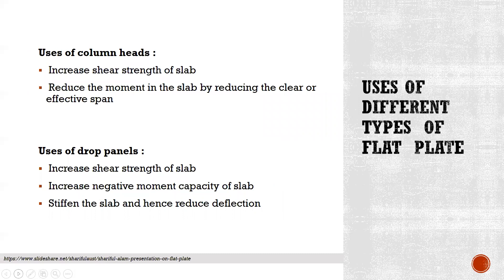Uses of different types of flat plate. Use of a column head: it increases the shear strength of the slab and reduces the moment in the slab by reducing the clear or effective span. Use of a drop panel: it increases the shear strength of the slab and increases the negative moment capacity of the slab, and since the slab depth increases, it reduces deflection.